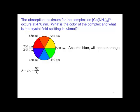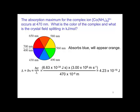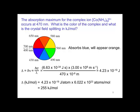Delta is equal to h-nu, or hc over lambda. Substituting in Planck's constant, the speed of light, and converting 470 nanometers to meters, we calculate an energy of 4.23 × 10⁻¹⁹ joules. In kilojoules per mole, we divide by Avogadro's number and convert joules to kilojoules, giving 255 kilojoules per mole.